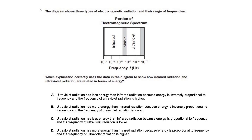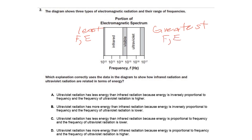Number two: the diagram shows three types of electromagnetic radiation — infrared, visible, ultraviolet — and their range of frequencies. We're going from the least frequency and least energy on the left to the greatest frequency and greatest energy on the right. As we go from left to right, frequency increases and energy increases as well because they are directly proportional.